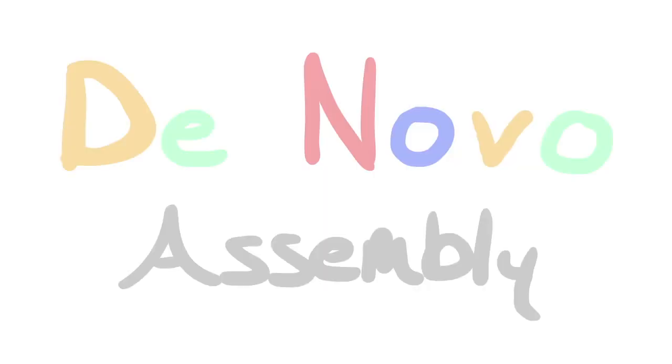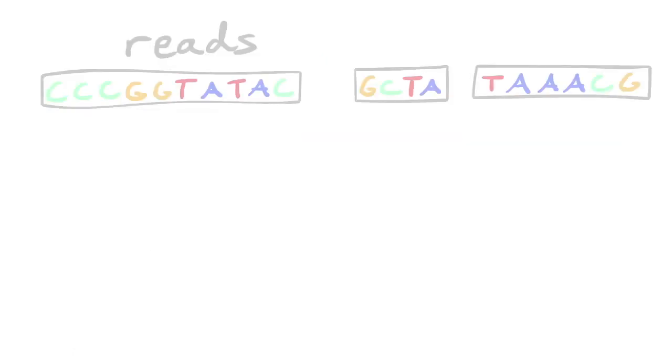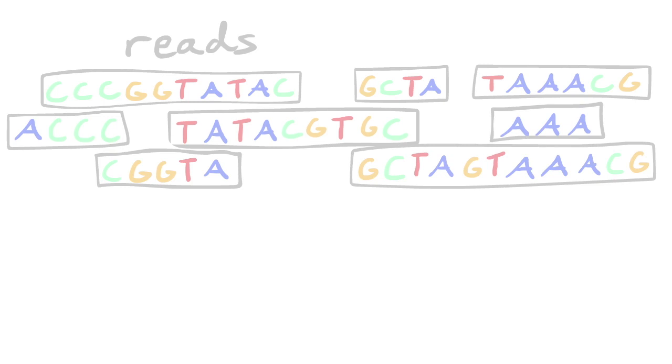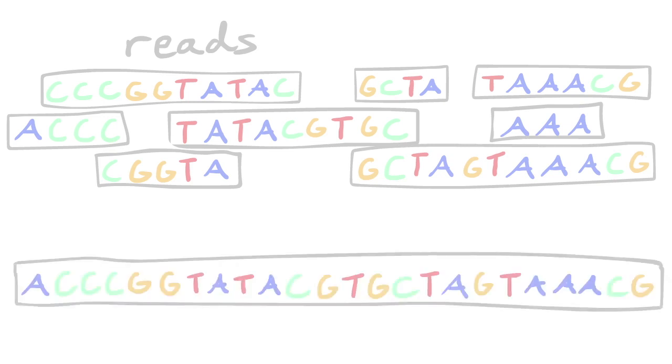A commonly used approach is de novo assembly, which doesn't require any prior knowledge of the bacterial identity. De novo assembly refers to the process of assembling short reads into longer continuous sequences or contigs without the use of a reference genome.